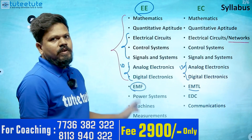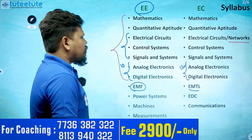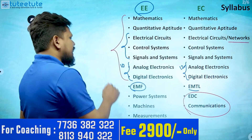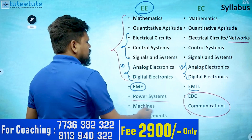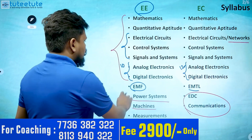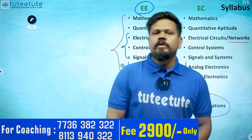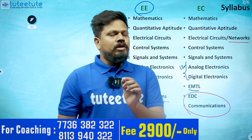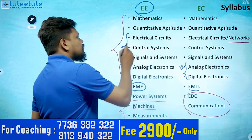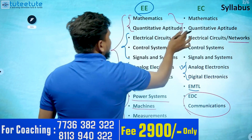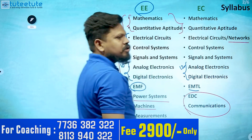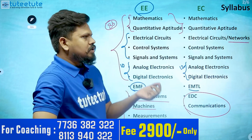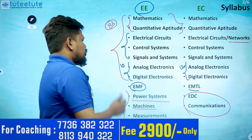Coming to the core part: for electronics it is communications and EDC; for electrical the core subjects are power systems, machines, measurements, and power electronics — the remaining marks come from these. Mathematics plus quantitative aptitude carries a total of 30 marks for both electrical and electronics, or any branch. You may get around 30 marks or one or two more from this section.